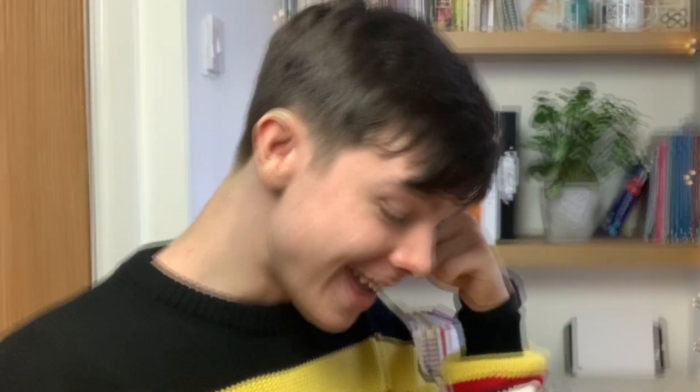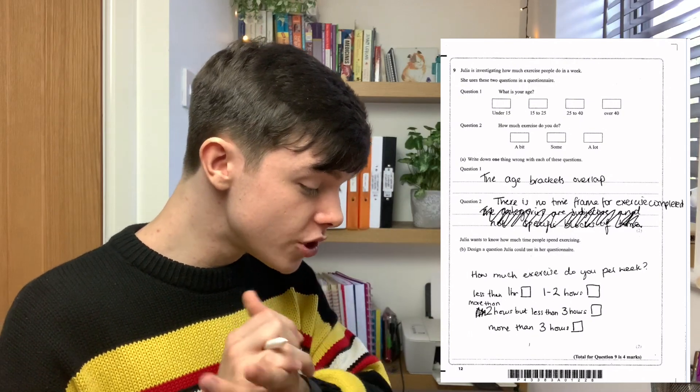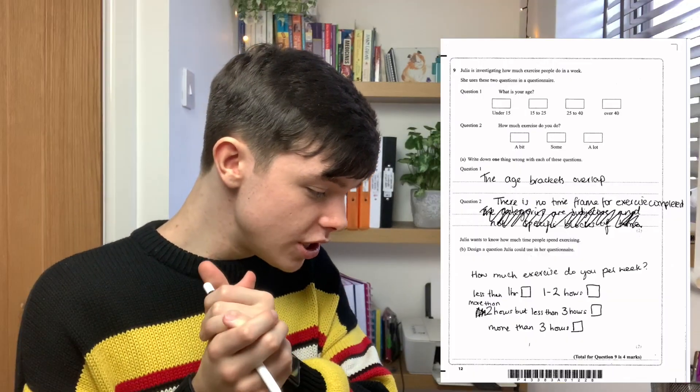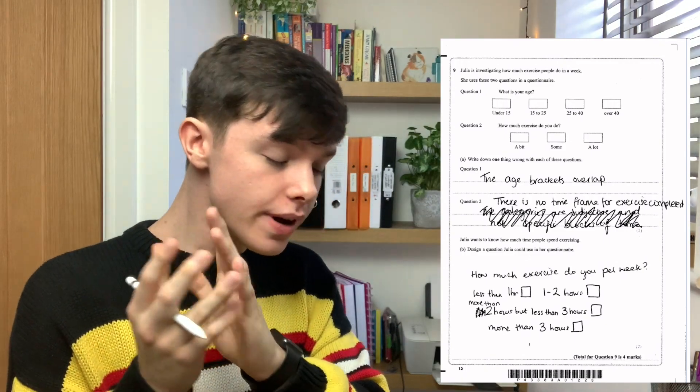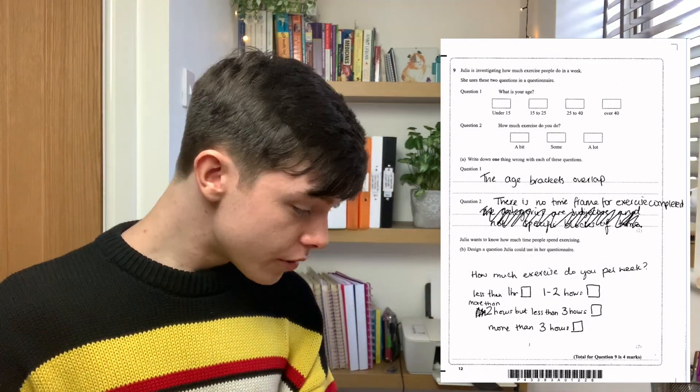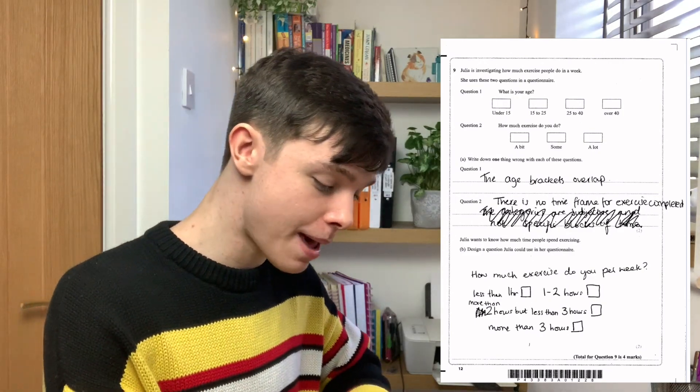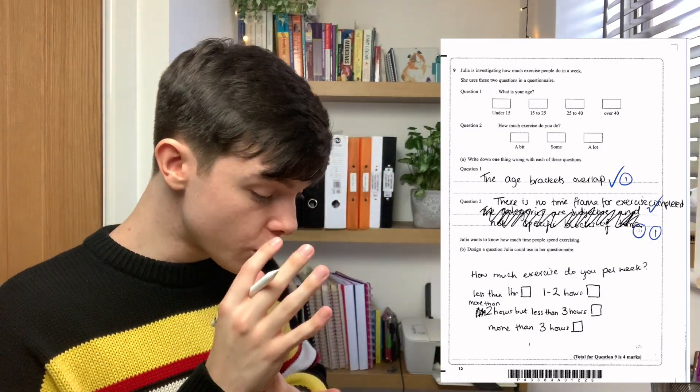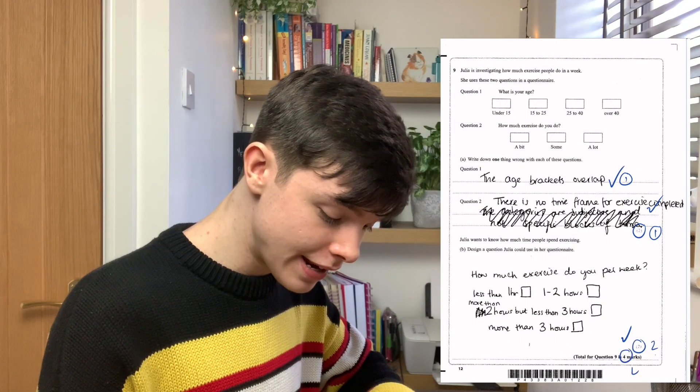Question eight. Is the answer 38? It is. Whoa. Five marks. It's going well. Question nine says, Julie is investigating how much exercise people do in a week. None for me. She uses these two questions in a questionnaire. Part A said, write down one thing wrong with each of these questions. We can accept that. That's one mark. Then you wanted to design a new questionnaire. That is correct. We can accept that. So question nine, four marks.